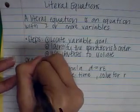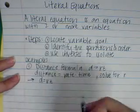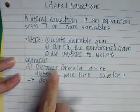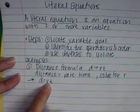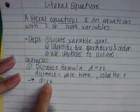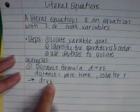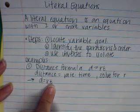To do that, we're going to rewrite our equation. D equals RT. We're going to locate our variable goal, which is R. We found that. We're going to identify the operations in order. It's being multiplied by T. That would be the operations. And that's the only thing happening. So, it's happening first.